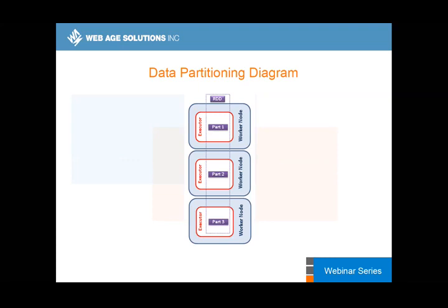Regarding data partitioning: when we deal with an RDD, it's just a logical name. Physically, it gets split into chunks of data, and every chunk will be loaded into a JVM of the executor process running on a worker node. In this case we've got three partitions — on HDFS the default is 128 megabytes, but you can set it to whatever you want.